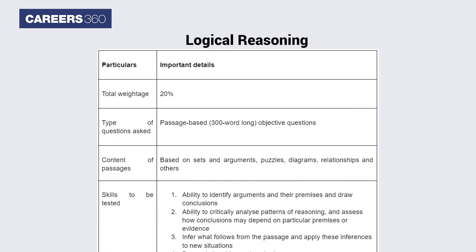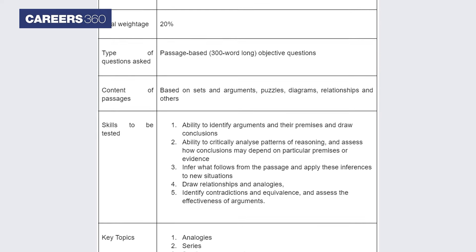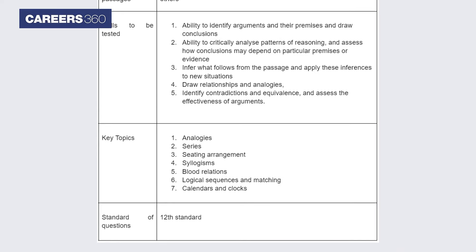Logical reasoning will have 28 to 32 questions based on 300-word long passages. This section assesses candidates' ability to identify arguments and their premises and draw conclusions, critically analyze patterns of reasoning, and assess how conclusions may depend on particular premises or evidence. Candidates must also infer what follows from the passages and apply these inferences to new situations, draw relationships and analogies, identify contradictions and equivalences, and assess the effectiveness of arguments. Students are advised to refer to 'Verbal and Non-Verbal Reasoning' and 'Analytical and Logical Reasoning' books by R.S. Aggarwal for this section.